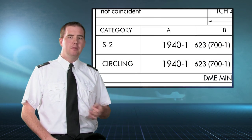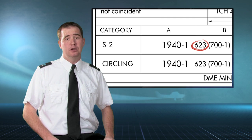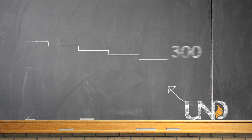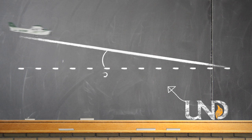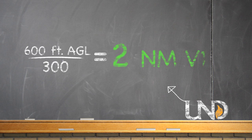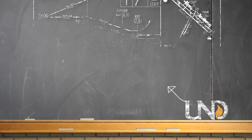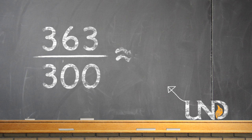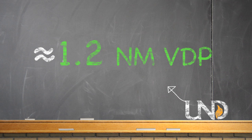If there is no charted VDP, the pilot can calculate one as follows: simply determine the minimum descent height, which will be an AGL altitude, and then divide by 300. The number 300 is used because 300 feet per nautical mile equals a 3-degree glide path. For example, if the MDH is 600 feet, divide 600 by 300, and your VDP is 2 nautical miles from the end of the runway. Using the Rochester VOR runway 2 approach, the minimum descent height for an aircraft with DME is 363 feet. Because 363 divided by 300 equals approximately 1.2, the visual descent point is 1.2 nautical miles from the end of the runway.